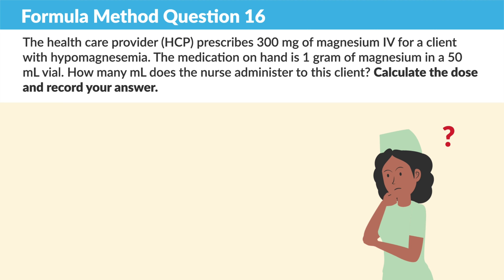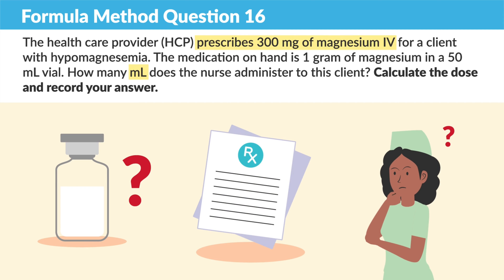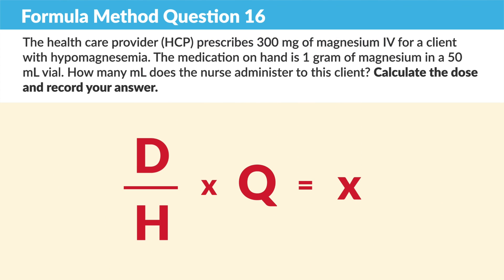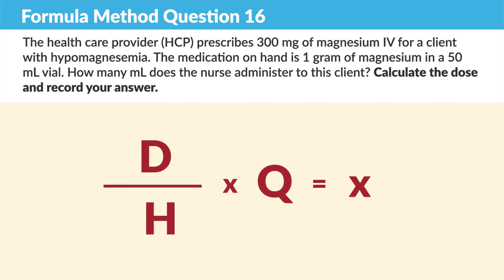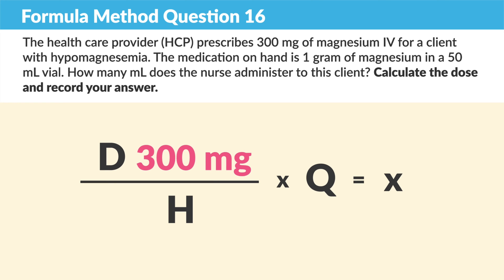Let's break this down. We're solving for milliliters per dose, and we're setting up the formula method: D over H times Q — or "drinks are on the house times the quantity." So the desired prescribed dose, D, is 300 milligrams.